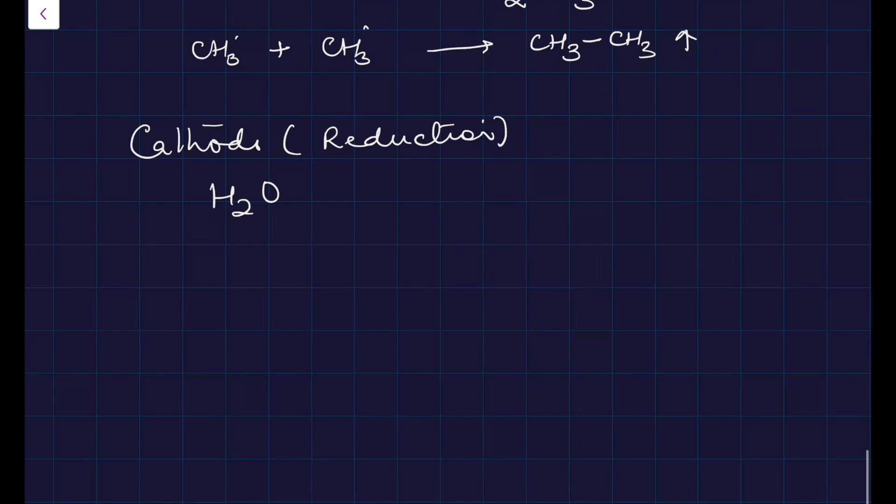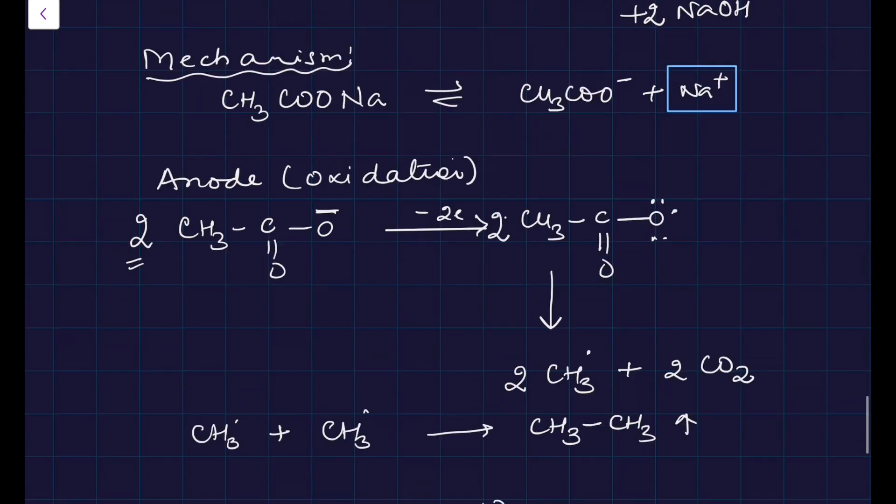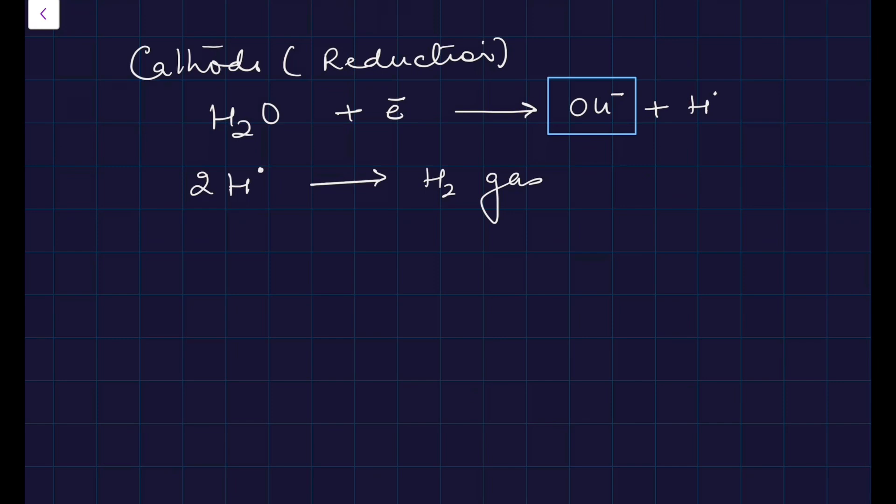At cathode, always reduction happens. Water accepts electron to give OH minus and hydrogen free radical. You get hydrogen free radical which combines with itself to give hydrogen gas. So there are two ions which we've not spoken about - OH minus and Na plus. These two ions are still in the medium. Na plus and OH minus remain in the electrolyte and you get NaOH.